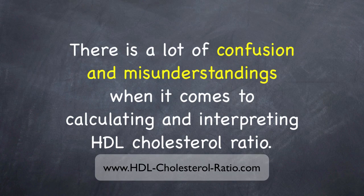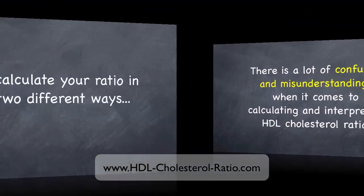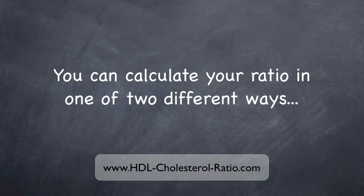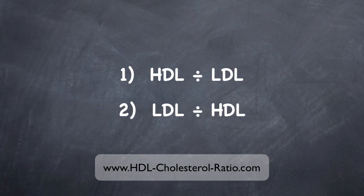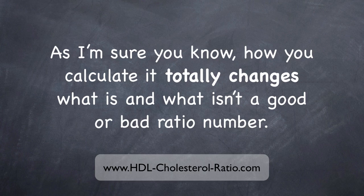You see, there's a lot of confusion and misunderstandings when it comes to both calculating and interpreting what the HDL cholesterol ratio is and what it means. Now, you can calculate your ratio in one of two different ways. The first way is to just take your HDL and divide it by your LDL, so the HDL is the numerator in this equation. The second way is to flip it around so that the LDL number is on top. In one sense, it doesn't matter how you calculate it, but as I'm sure you can tell by this formula, how you calculate it totally changes what is and what isn't a good or bad ratio number.